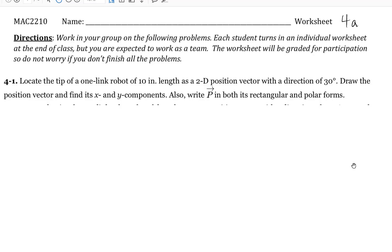It says locate the tip of a one-link robot of 10-inch length as a 2D position vector with a direction of 30 degrees.